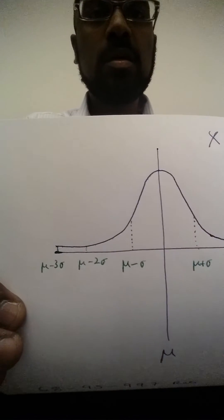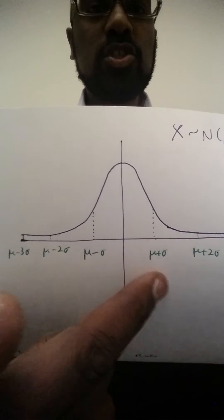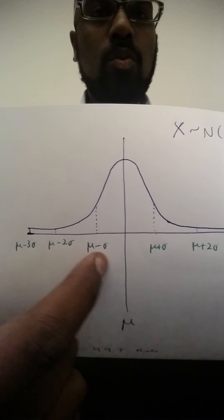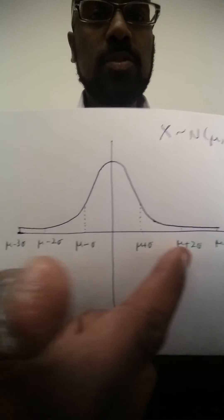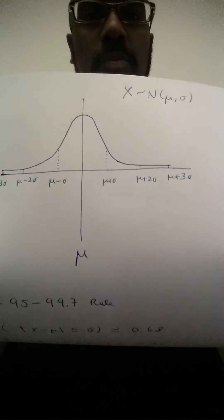So here I've marked the points in which the distribution is one standard deviation away from the mean, two standard deviations, and three standard deviations. And the rule of thumb is the following.